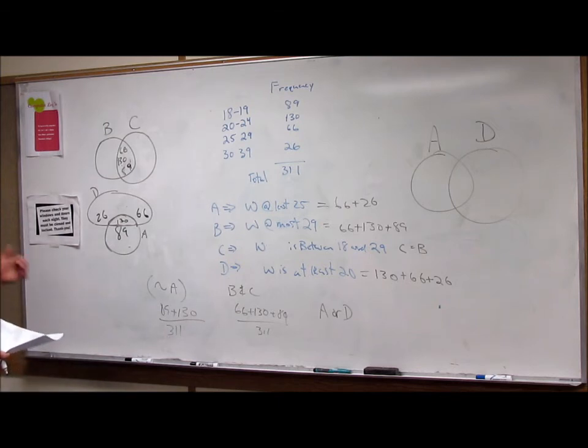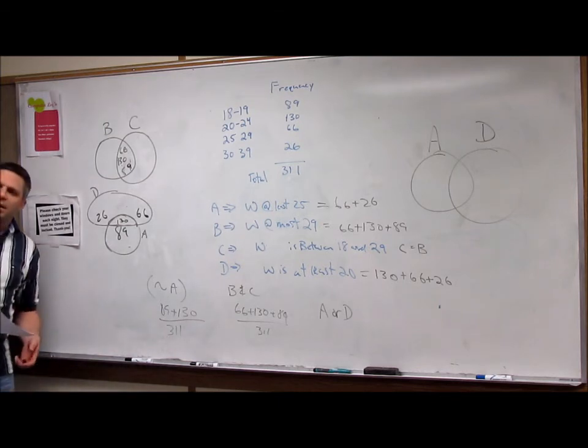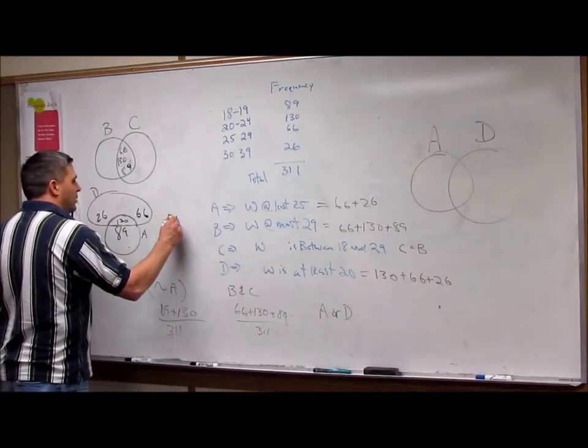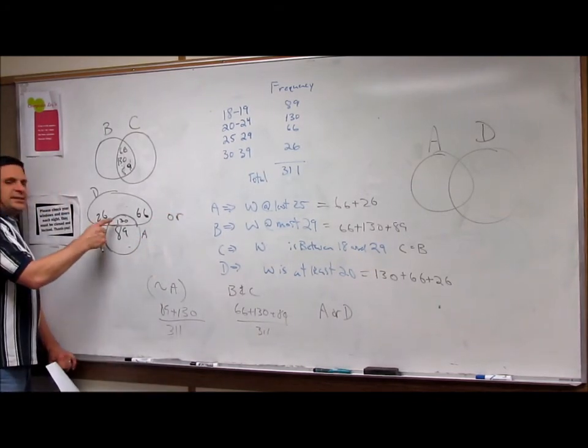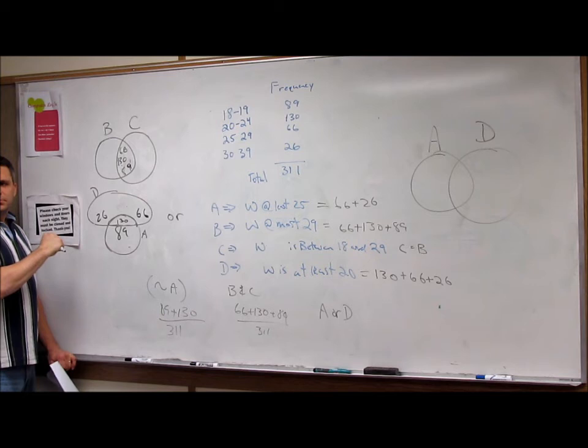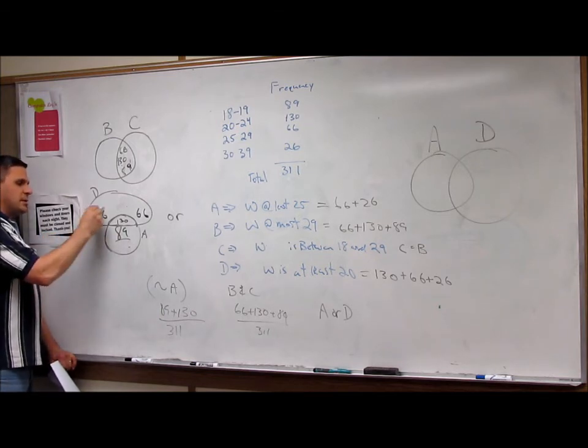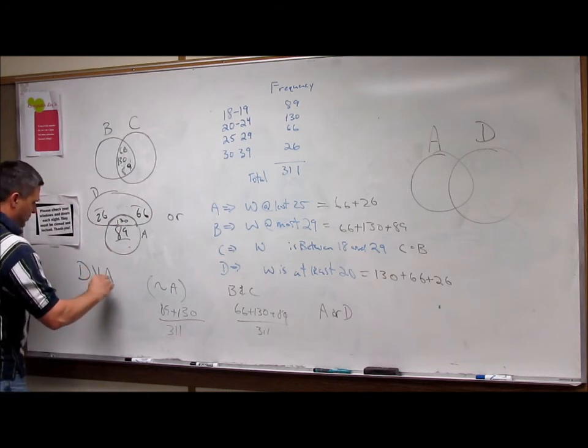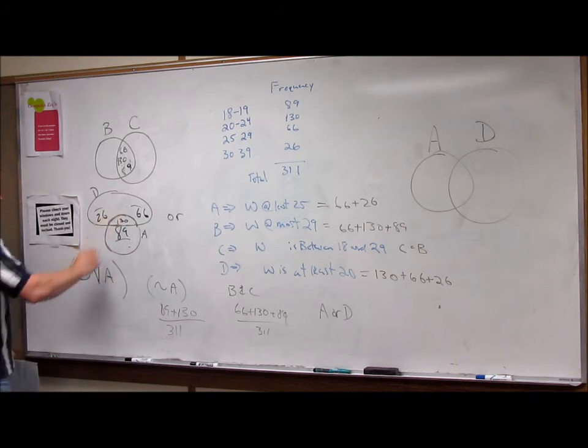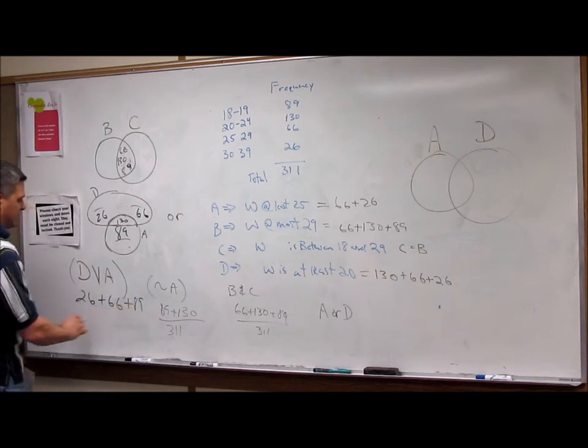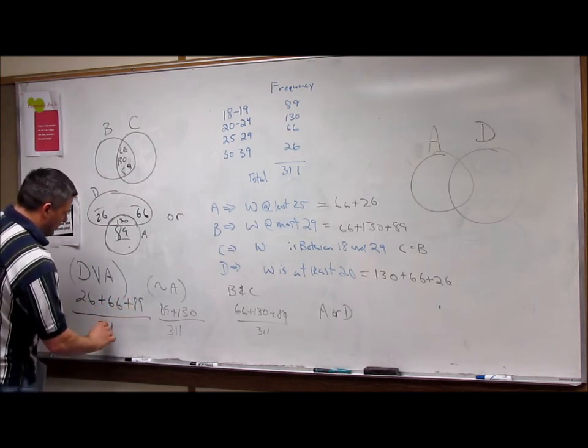Now when we say or, we usually are talking the exclusive or, not the inclusive or. And what that means is, when we're talking or, we're talking not and. So anything not in both of them. So then we're talking this, this, this. So when I said D or A, then what I mean is 26 plus 66 plus 89 over 311.